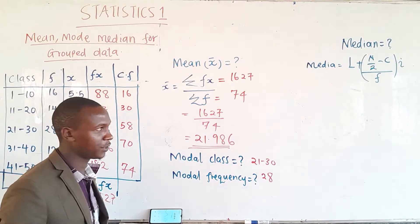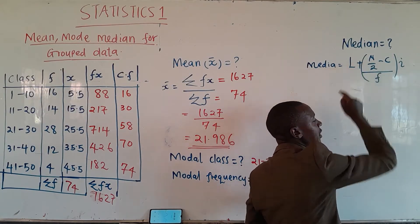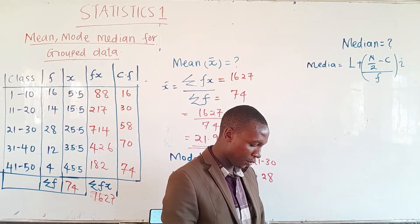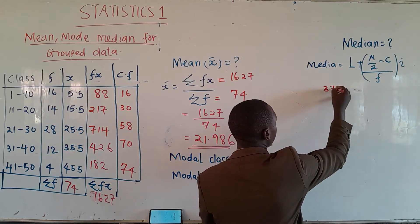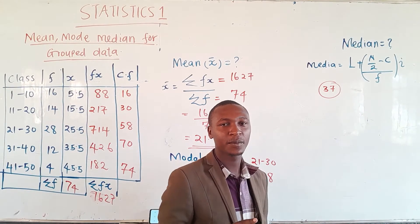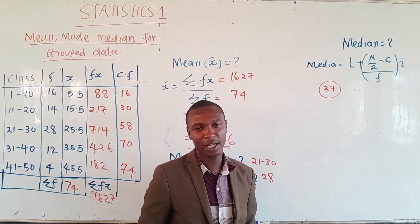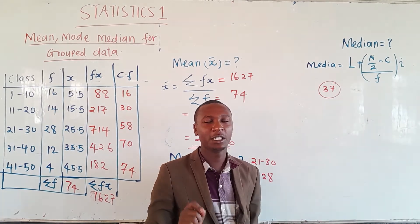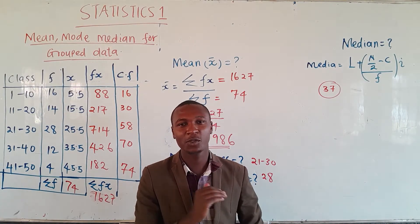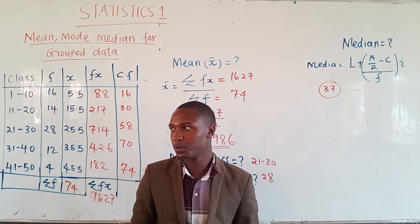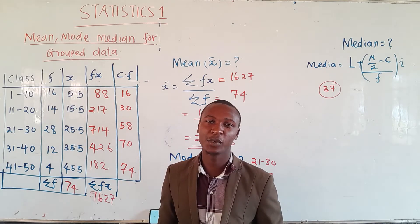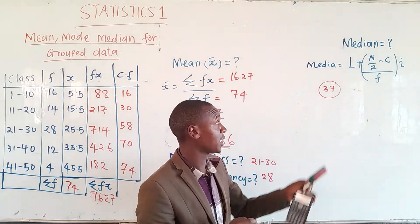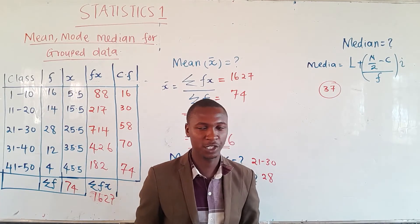To find the median class, take n/2 = 37. We need c, the cumulative frequency above the median class, which must be the smallest cumulative frequency such that 37 minus that value is positive. Starting from the bottom and going upward, we test each cumulative frequency to find the minimum value where 37 minus that CF is not negative or zero.